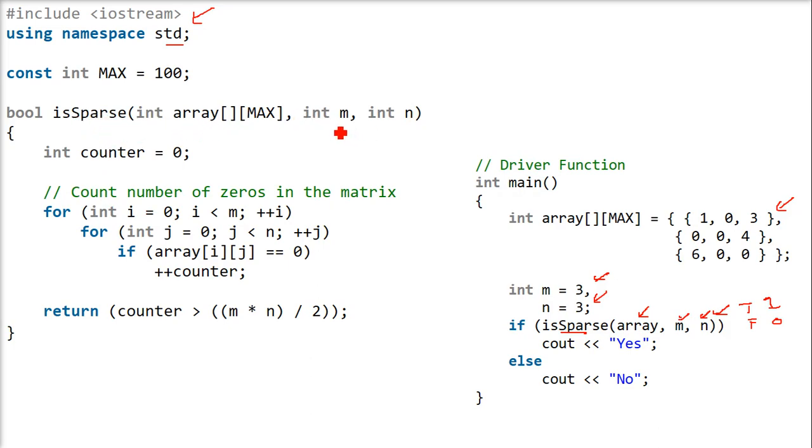We have the array, then M and N. Whenever we initialize and declare a matrix and put the values here, we don't need to give the number of rows. Only columns have to be given. It depends on you, but it will take the value of 3 when you don't give anything here because it is, of course, 3 by 3.